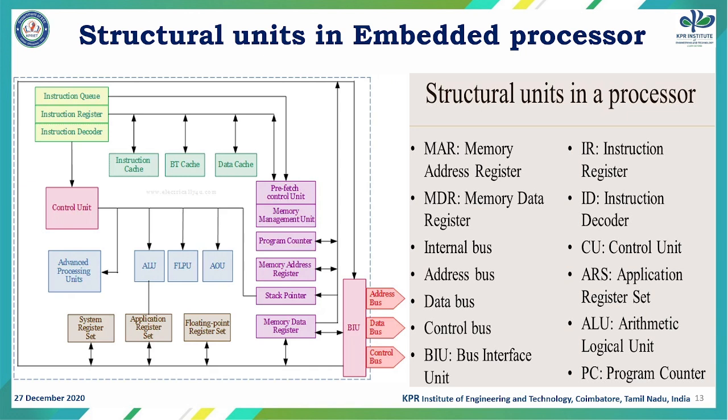The atomic operation unit executes instructions when a large instruction is split into smaller sub-modules and executed by the processor. For executing, it requires a set of general purpose registers. For the ALU, it uses an application register set where general purpose registers are used for processing intermediate data.